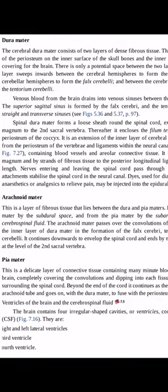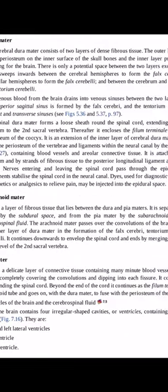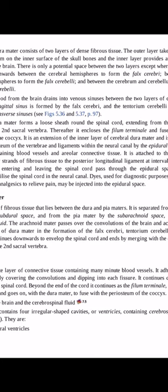The spinal dura mater forms a loose sheath around the spinal cord. It is an extension of the cerebral dura mater, enclosing the spinal cord, and after that it also encloses the filum terminale and fuses with the coccyx.